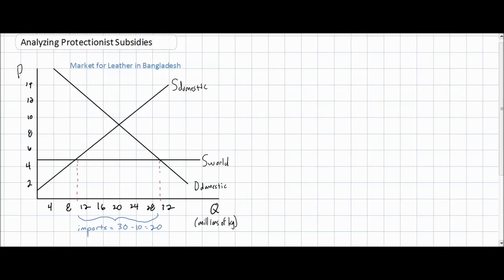In this video lesson we're going to discuss protectionism. Specifically, we're going to talk about the effects of protectionist subsidies on the market for a good that is imported into a country practicing the protectionism. The market we'll look at today comes from an example thought up by a student in one of my IB year 2 economics classes. Today we'll be talking about the market for leather in the country of Bangladesh.